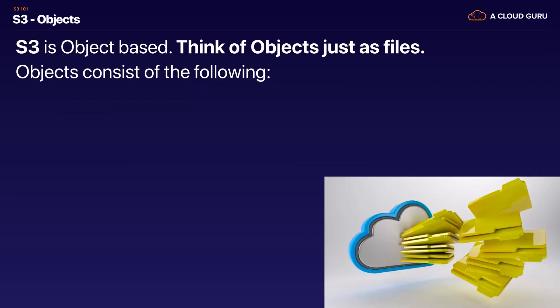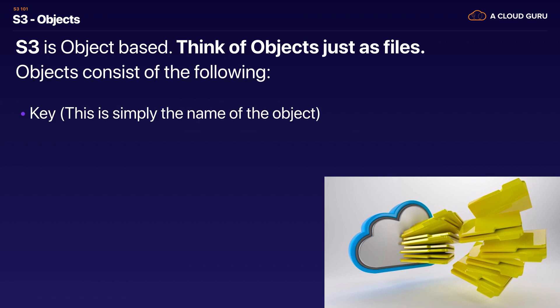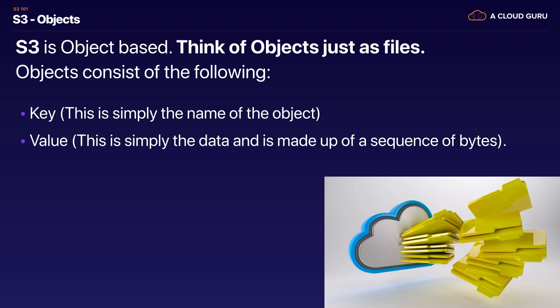S3 is object-based — think of objects as files. Objects consist of the following: a key, which is simply the name of the object; a value, which is the data made up of a sequence of bytes; and a version ID, which is important for versioning. S3 allows you to have multiple versions of your file — version one, version two — and you can do version control to go back to a previous version.